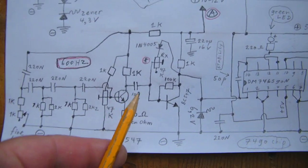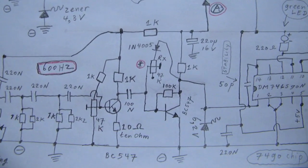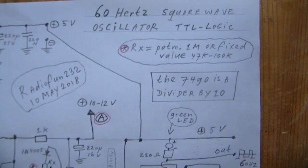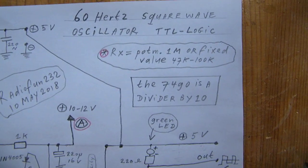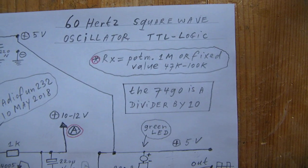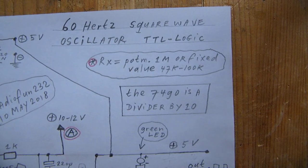Here we have a resistor that's a variable resistor, RX, and that can be between 47k and 100k. For experiments use a pot meter from one mega ohm.